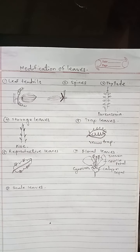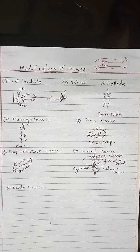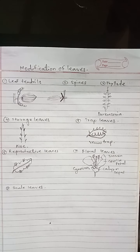Floral leaves: floral parts such as sepals, petals, stamens, and carpels are modified leaves. Sepals and petals are leafy, while stamens are considered pollen-bearing microsporophylls and carpels are ovule-bearing megasporophylls.